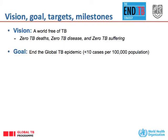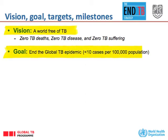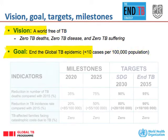These are the vision, goal, targets, and milestones in more detail. The vision is a world free of TB. The goal is to end the epidemic — when we speak of an epidemic, we mean something that is more than 10 cases per 100,000 people, which is roughly the limit for low incidence countries.